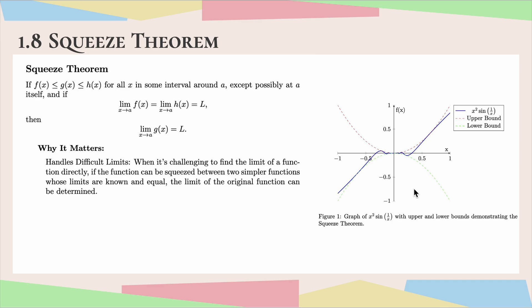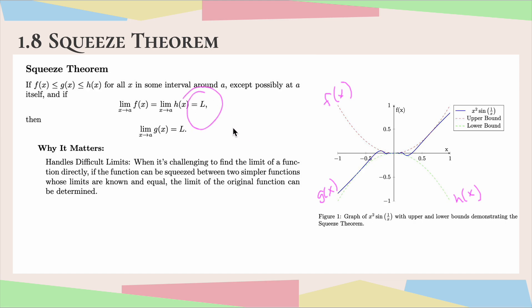So what we can do instead is we can actually squeeze or sandwich this function in between two other functions, and then we can take the limit of those functions. You can see here this upper bound, it looks like it's a red color — let's say this is our f function. Down here below in a light green color, let's say this is our h function. And then in the middle, our actual target function, this darker blue function, this would be our g function. Because we've squeezed or sandwiched g in between f and h, if we can take the limit of f and take the limit of h, and if those both equal some number L, then we can conclude that our target function g also equals L.